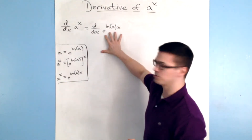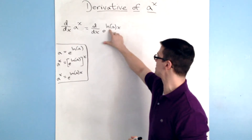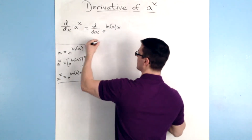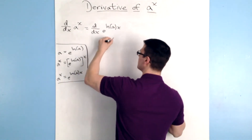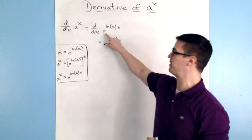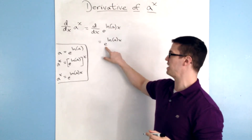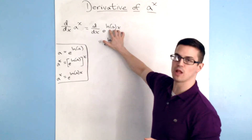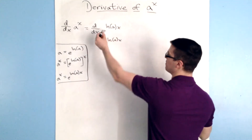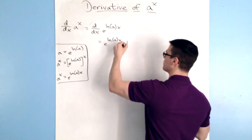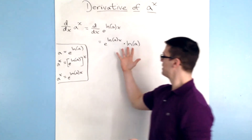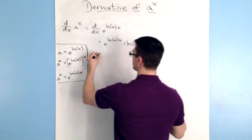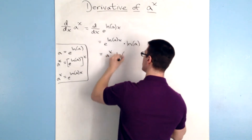From here, it looks like a simple chain rule problem. I have this outside layer of e, and then this inside function ln a times x. To find this derivative, I'm going to take the derivative of that outside layer, so this is going to be e to the ln a times x — because the derivative of e to some power is that same e to the power. Then I'm going to multiply by the derivative of the inner layer, ln a times x, which is just ln a. So you end up times ln a.